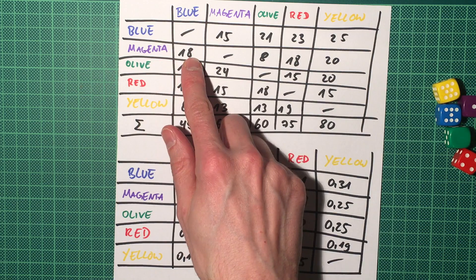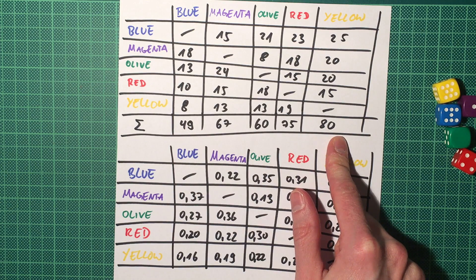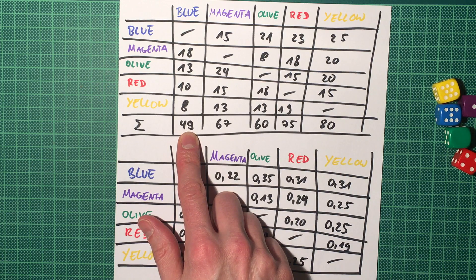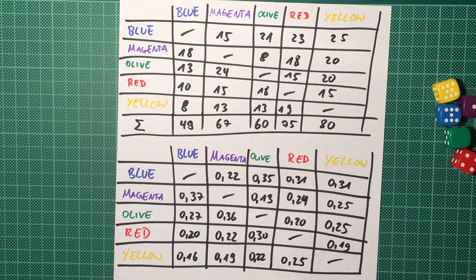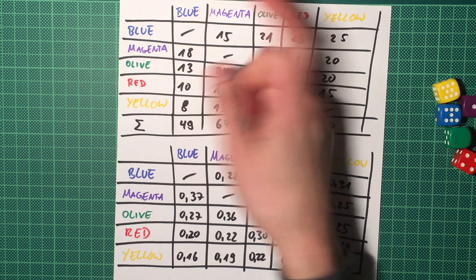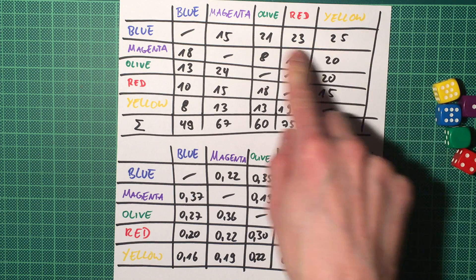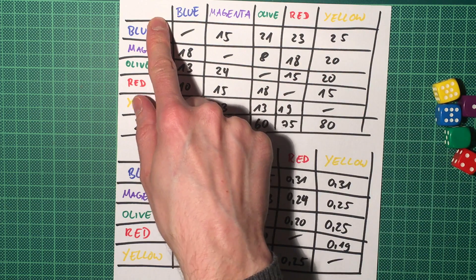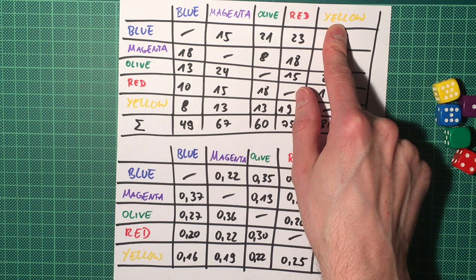For example, blue beat magenta 18 times, olive 13 times, red 10 times, et cetera. And also the total number of wins. So, as you can see, blue is in absolute terms the weakest die in the set with only 49 wins. And yellow is the strongest one with 80 wins. However, blue will be beaten by yellow actually. Yellow beats blue 25 times. And blue beats yellow only eight times. So, that's why you get the non-transitive thing going and you get the circle where blue beats magenta, magenta beats olive, olive beats red, and red beats yellow. And yellow again beats blue.